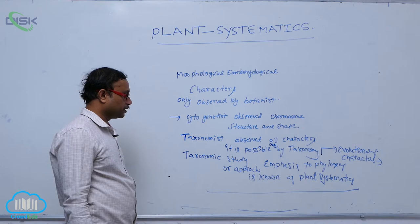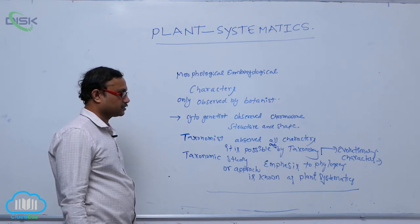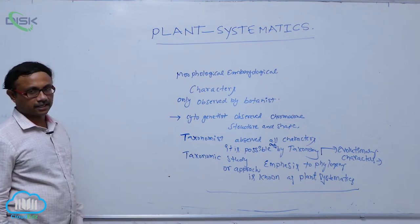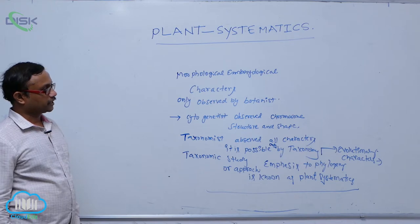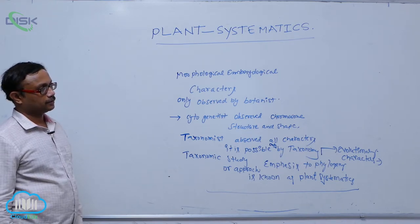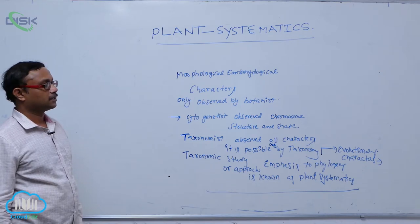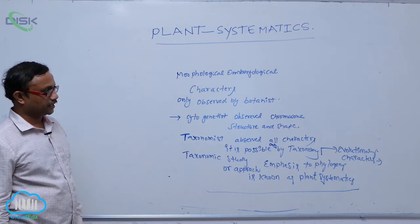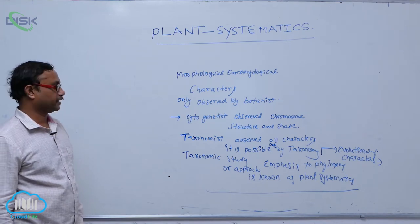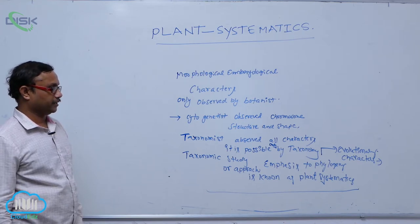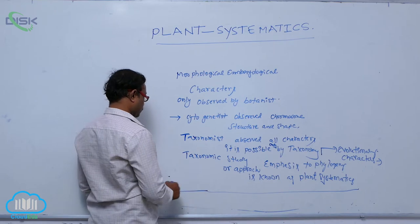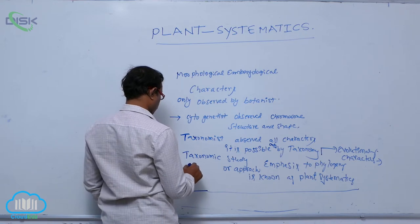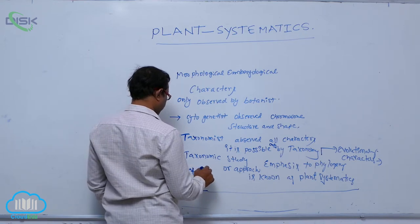Phylogeny provides evolutionary characters as an approach to taxonomic study. Evolutionary characters are applied for identification, nomenclature, and classification of plants. That is known as plant systematics, or systematic botany.